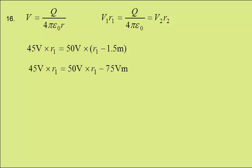We can then expand out the brackets, rearrange and simplify to give r1 as 75 volt metres over 5 volts, giving 15 metres.